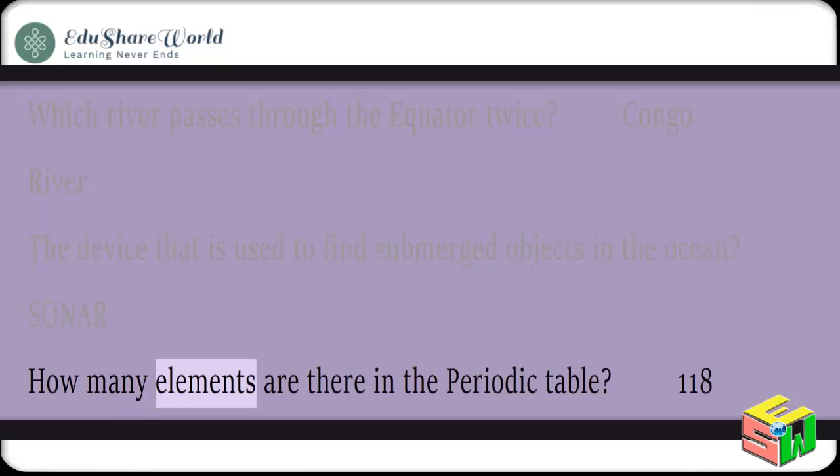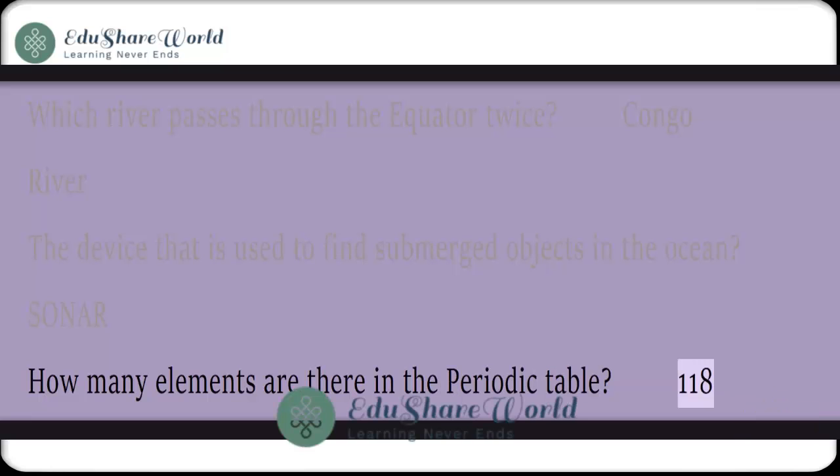How many elements are there in the periodic table? 118.